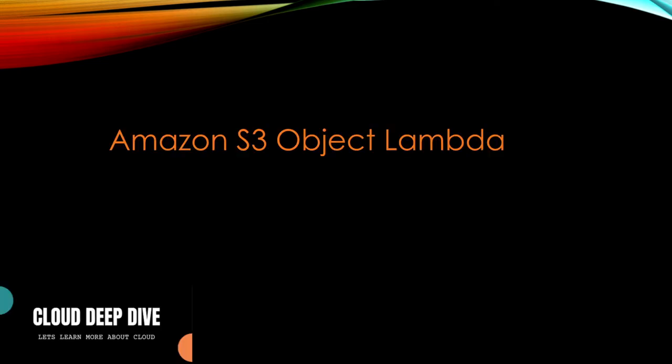So in today's video, we will talk about a new service launched by Amazon: Amazon S3 Object Lambda. Amazon S3 Object Lambda helps you to transform your object whenever you are retrieving it from an S3 bucket and pass it to your application. It intercepts your S3 GET request, gets the data from the S3 bucket, uses a Lambda function to transform that object into the required format, and then passes it back to your application.